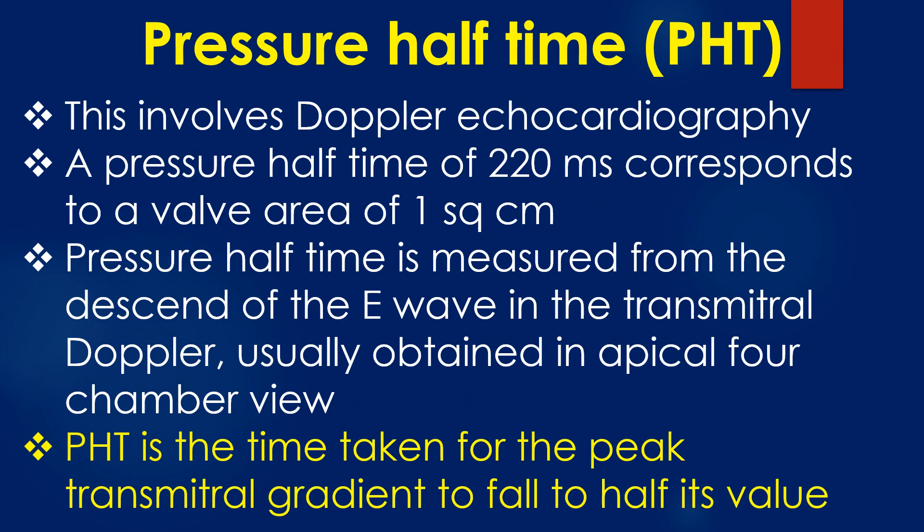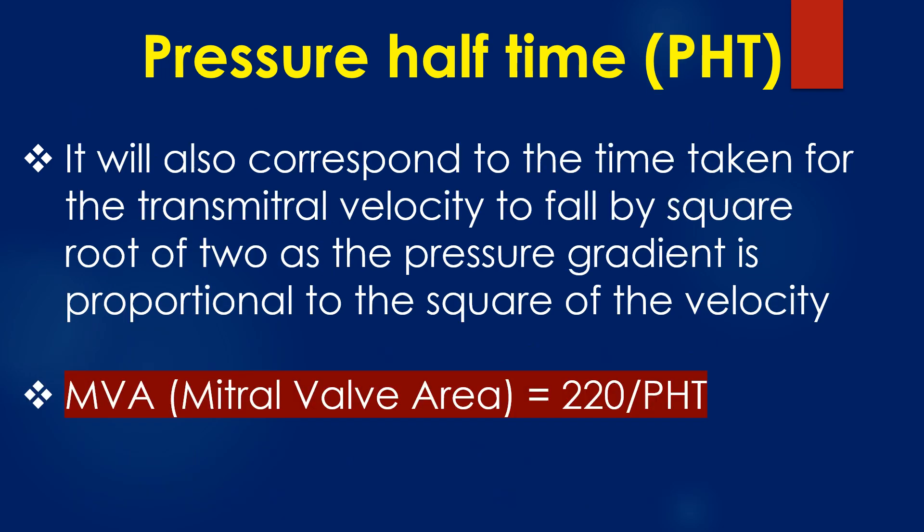Assessment of mitral valve area by the pressure half-time method involves Doppler echocardiography. A pressure half-time of 220 ms corresponds to a valve area of 1 cm². Pressure half-time is measured from the descent of the E wave in the transmitral Doppler, usually obtained in the apical 4-chamber view. It is the time taken for the peak transmitral gradient to fall to half its value, corresponding to the time taken for the transmitral velocity to fall by a factor of the square root of 2, since pressure gradient is proportional to the square of the velocity. Mitral valve area equals 220 divided by the pressure half-time.